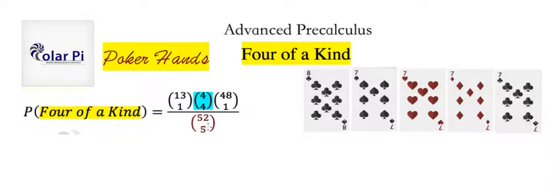Now, the 52 choose 5 has been ever present in every video on poker probability, so you should know what that is about. This 13 choose 1, if you don't know what the 52 choose 5 is about, you should watch one of the earlier videos.